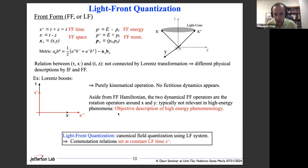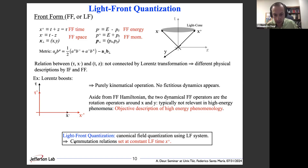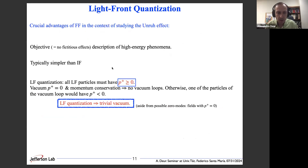Light-front quantization is simply the canonical quantization of the field using the light-front coordinate system. One important thing to keep in mind: the commutation relations will be set at constant time, and in light-front quantization that constant time is constant light-front time.